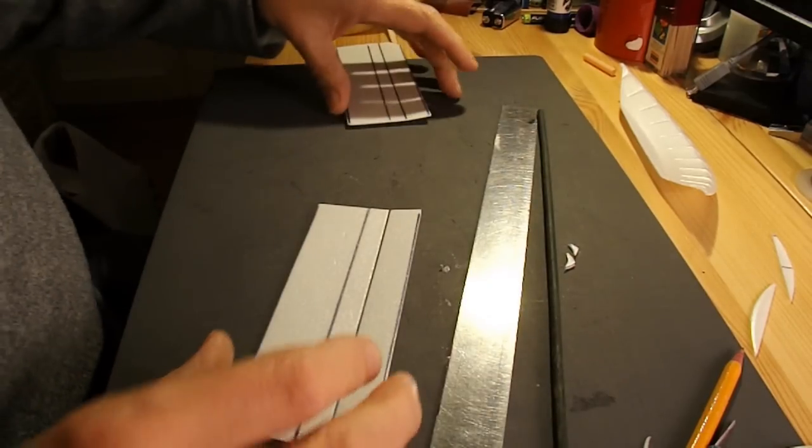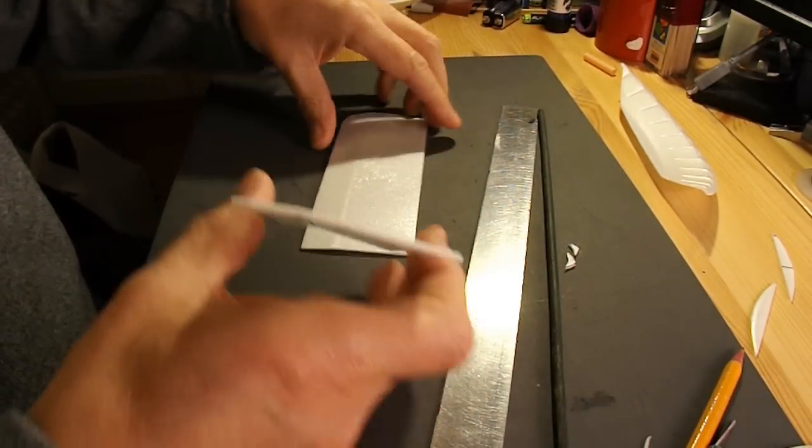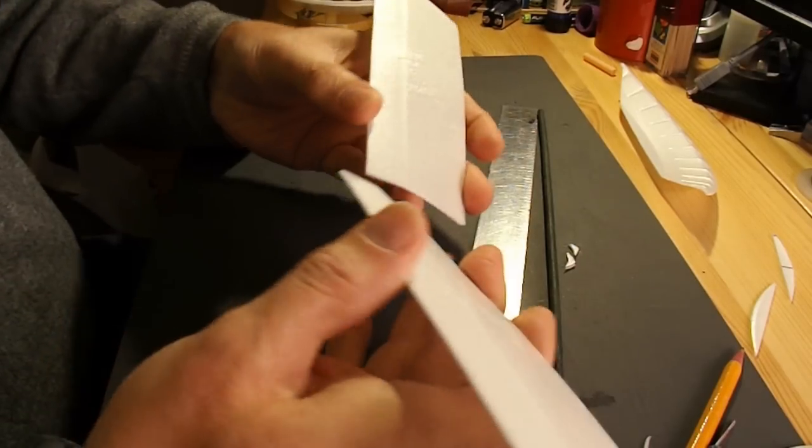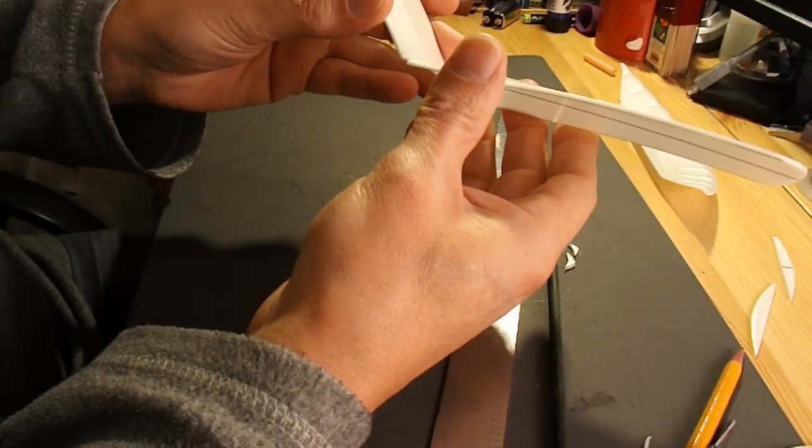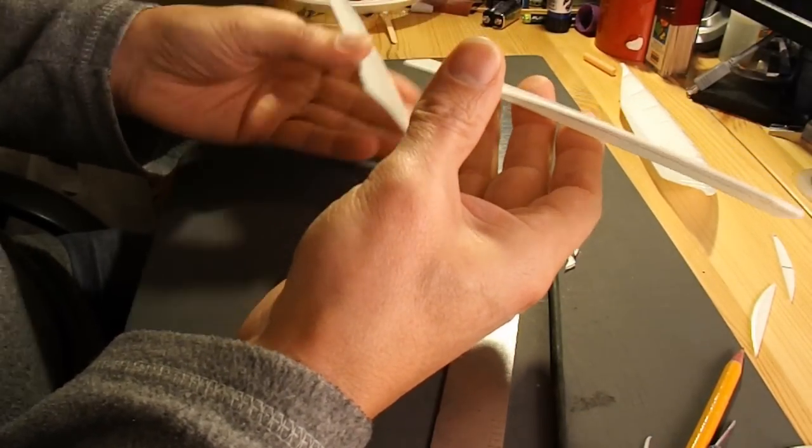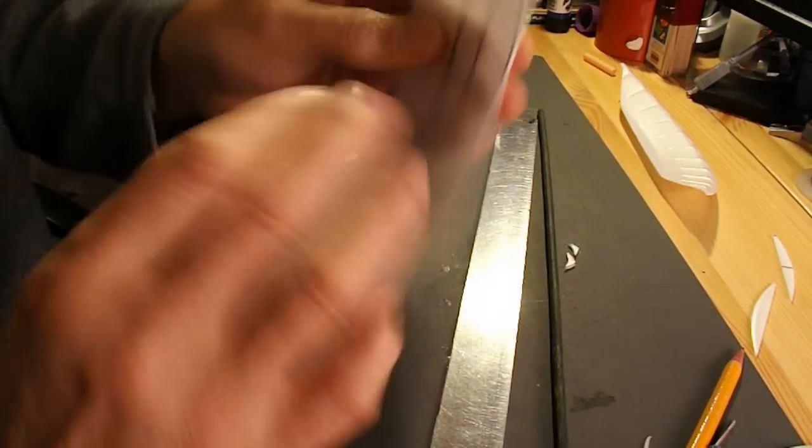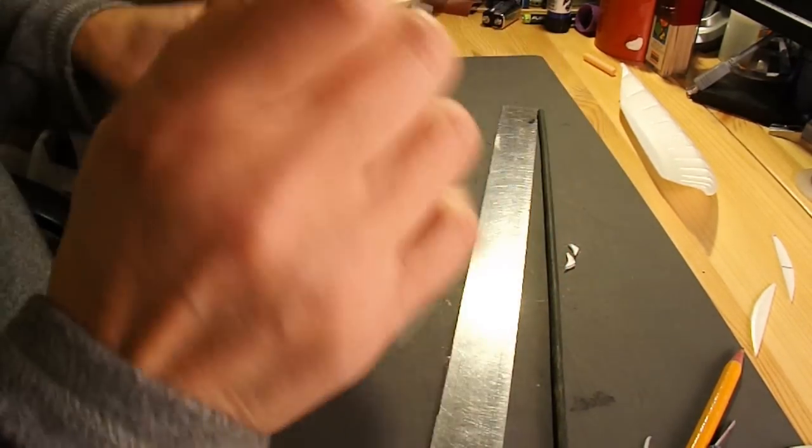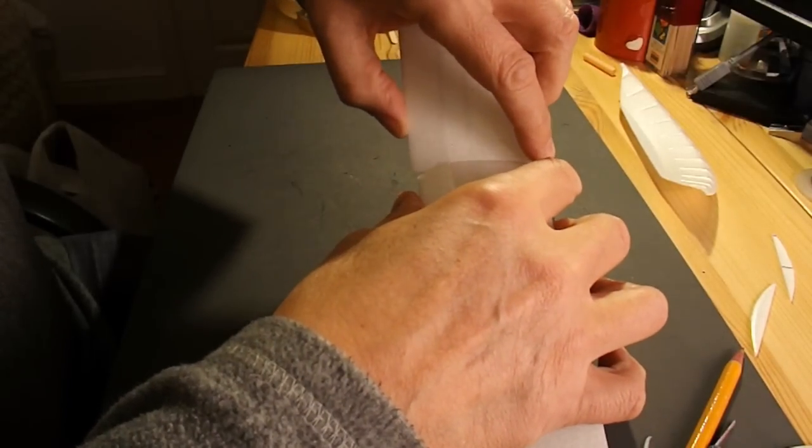Before I actually do that gluing one thing I want is dihedral as they call it. The wings will need to be folded up slightly. That means I've got to do some trimming on the inside edge there so that when they've got their shape they'll actually fold up nicely.